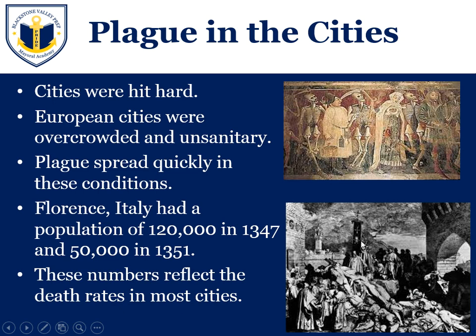For example, Florence, Italy had a population of 120,000 in 1347, making it one of the larger cities in Europe. Four years later, they were down to 50,000 — well over half the population lost. Cities were hit harder than other areas, and Florence is pretty typical. You see similar drops in London, Paris, Venice, and Genoa.